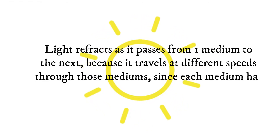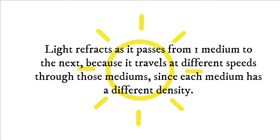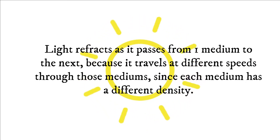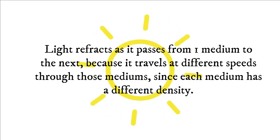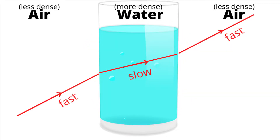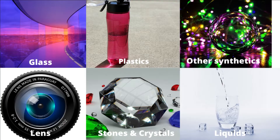Light refracts as it passes from one medium to the next because it travels at different speeds through those mediums. Since each medium has a different density, light travels fastest through air, a little slower through water, and even slower through glass.